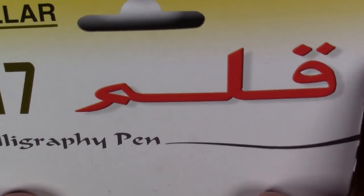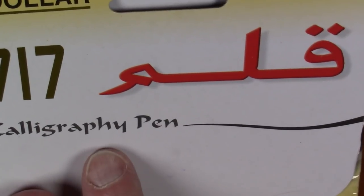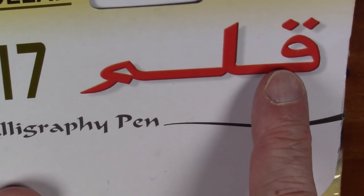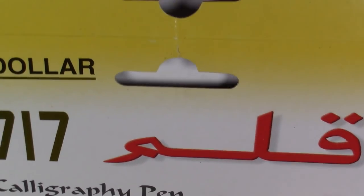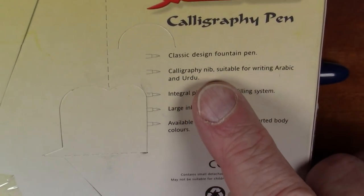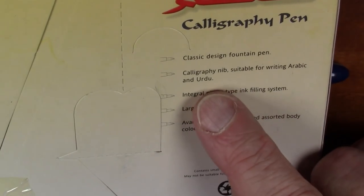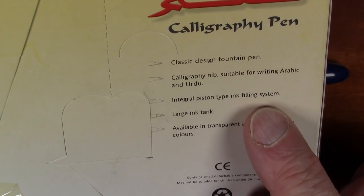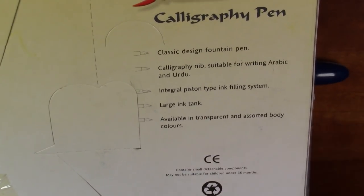This package here says 717 Calligraphy Pen, and this here means pen in Urdu. If you look on the back, it says it's got a calligraphy nib suitable for writing Arabic and Urdu, an integral piston type ink filling system, large ink tank, etc.